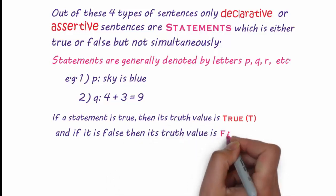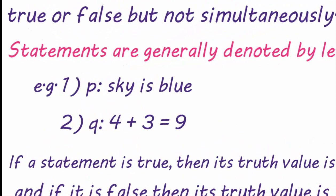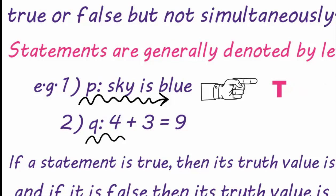In the statement P: sky is blue, its truth value is true. And in the second example, Q: 4 plus 3 is equal to 9, its truth value is false.